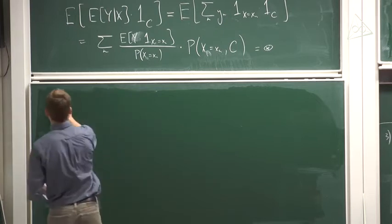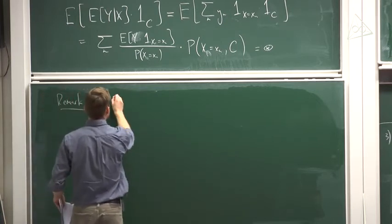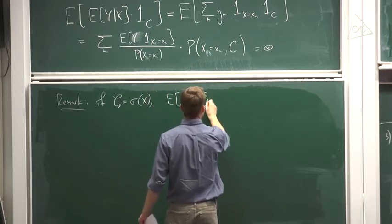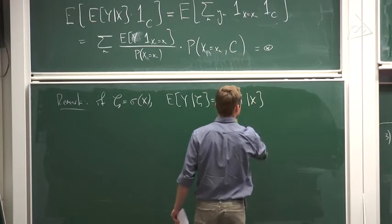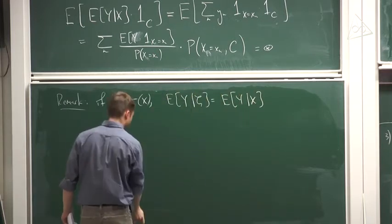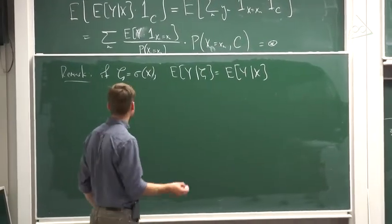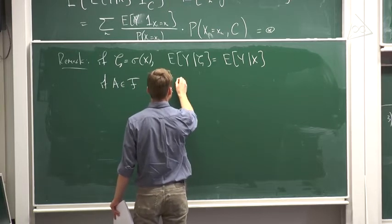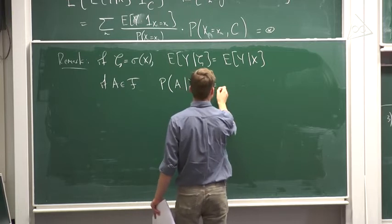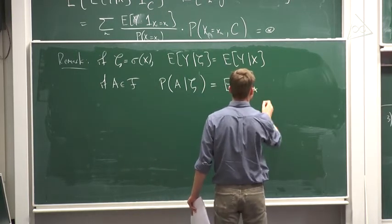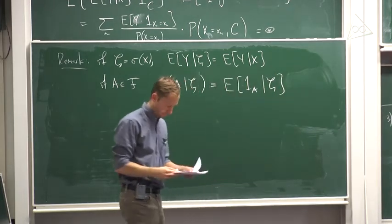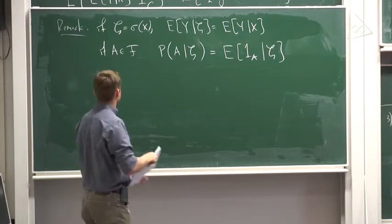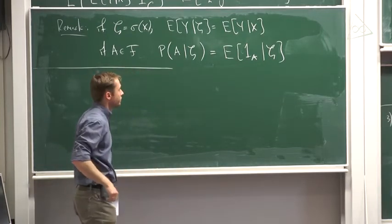Let me remark: if 𝒢 is the sigma algebra generated by X, then E[Y|𝒢] is often denoted E[Y|X]. Also, one could define the conditional probability of some event: if A is an event in sigma algebra F, then the probability of A given sigma algebra 𝒢 is just E[1_A | 𝒢]. Now let me give you the proof of this theorem.